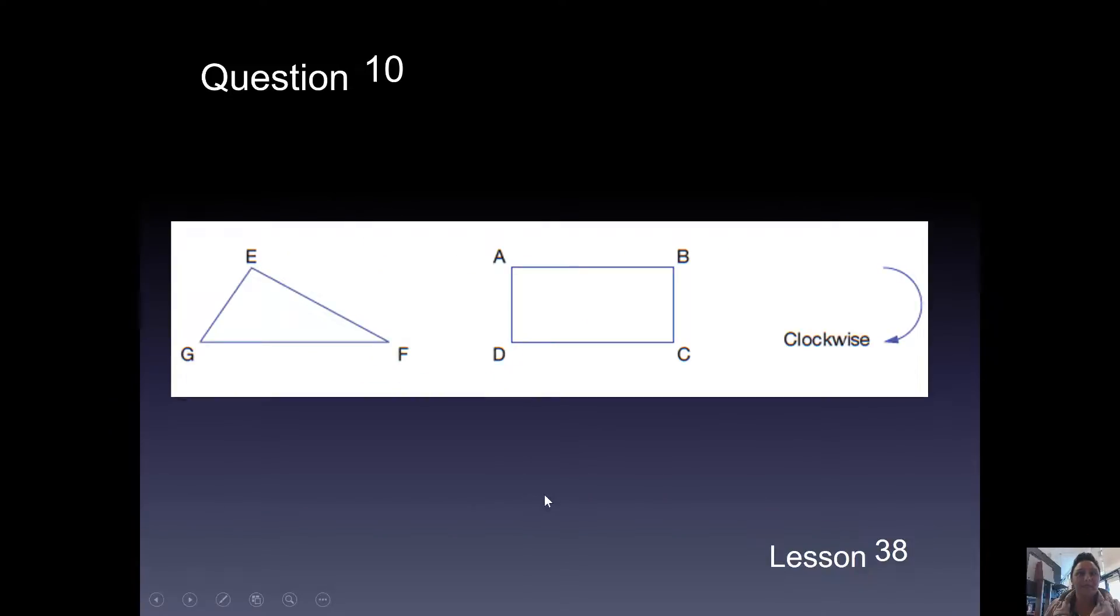The polygon named EFG is made up of three sides. It could begin with any letter, but the other letters must then be expressed in clockwise or counter-clockwise order. Look at polygons. Question 10. Which possible names, starting with the letter C, describe the rectangle?